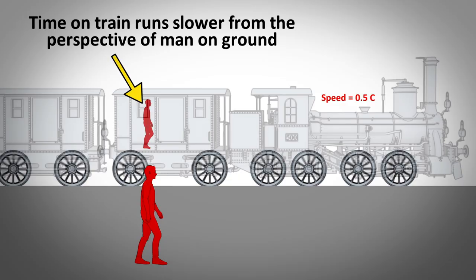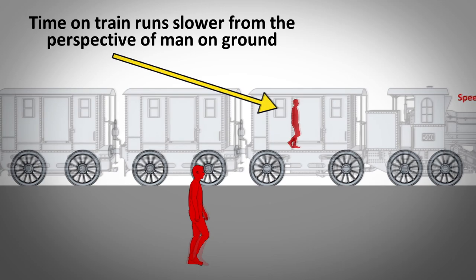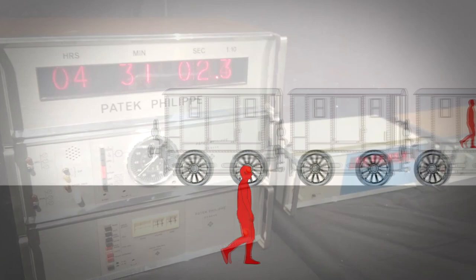It turns out that higher gravity and higher speed can slow time down when compared to a reference frame that has lower gravity and lower speed. This really does happen, and has been proven in many experiments.